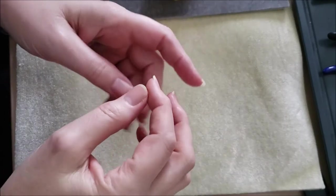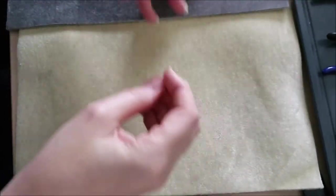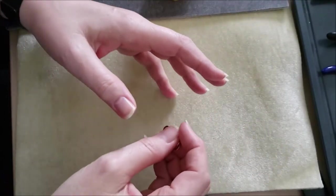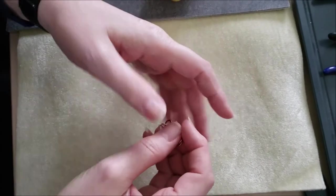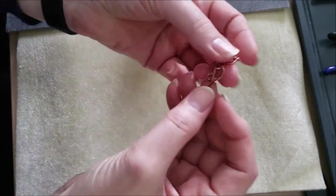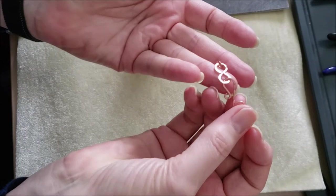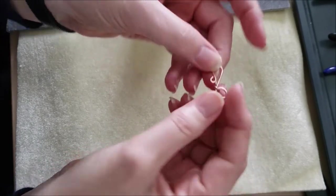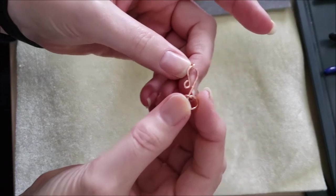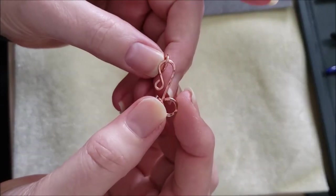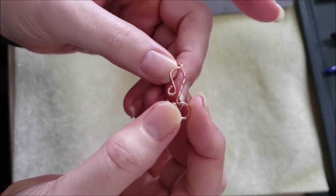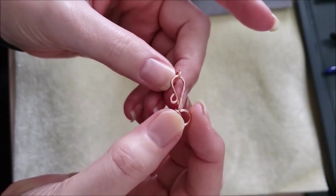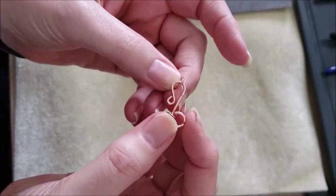We're going to try a new camera angle today because I don't want the camera stand to be between me and the wire. Just a quick reminder, we're making a hook and eye clasp. I don't know if you can see it, but there's some texturing on this clasp and I'm going to show you how to do that today.